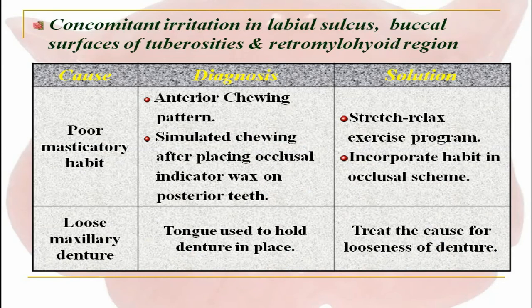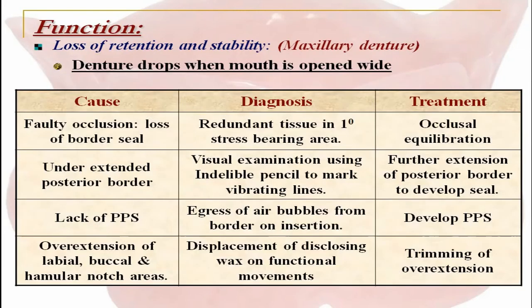Concomitant irritation in the labial sulcus, buccal surfaces of tuberosities, and retromylohyoid region: causes could be poor masticatory habit, diagnosed by anterior chewing pattern simulated after placing occlusal indicator wax on posterior teeth; the solution could be a stretch-relax exercise program for the patient and incorporating the habit in the occlusal scheme. The next cause could be a loose maxillary denture, diagnosed by the patient using the tongue to hold the denture in place; the solution is to treat the cause of loosening of the denture.